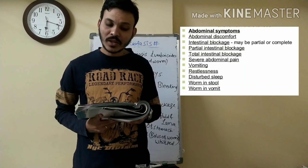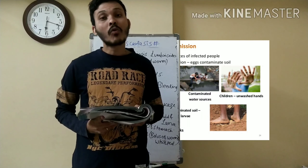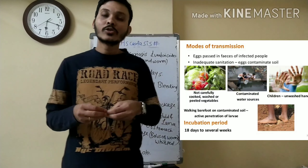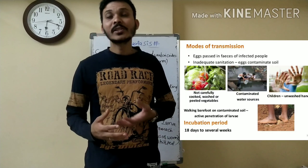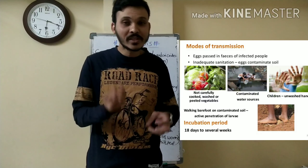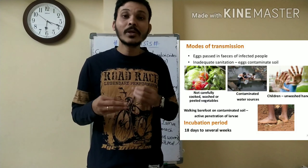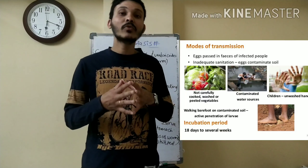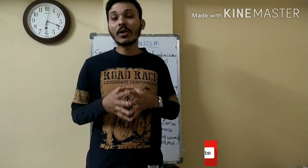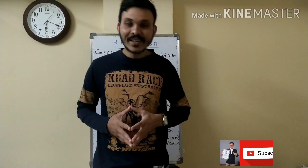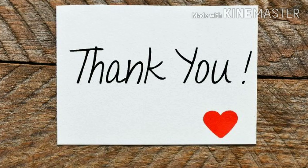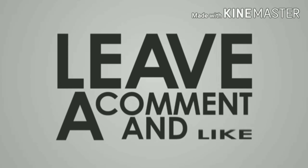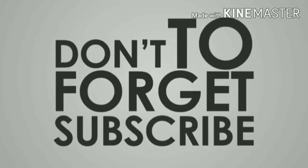The eggs of the parasite are extracted along with the faeces of the infected person, which contaminate the soil, water, and plants. A healthy person acquires infection through contaminated water, vegetables, and food. The egg has gone into the soil and onto vegetables — if there is a contaminated plant, it can also remain in that form. This was all about Ascariasis. We are going to continue with elephantiasis in the next lecture. Thank you so much.